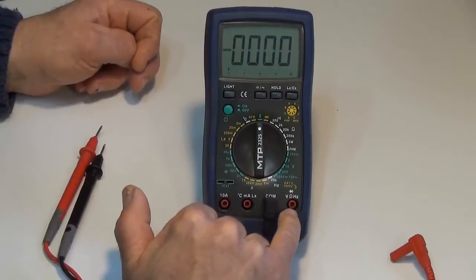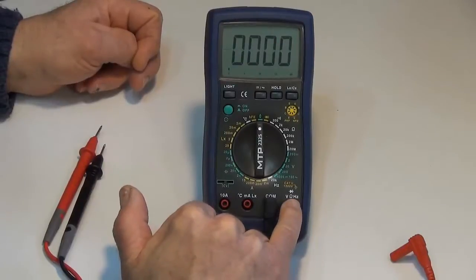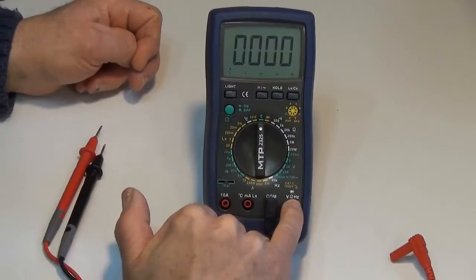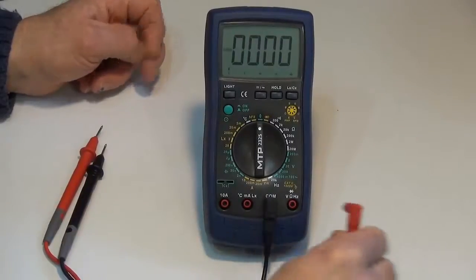And the red is going to go into the volts, ohm, hertz, diode check on this meter. Ohms is what I'm looking for because I'm going to be doing a resistance check. So this is where the red lead is going to go.